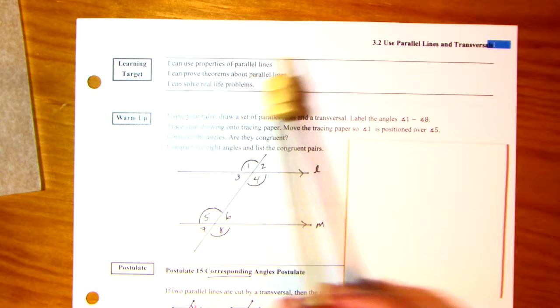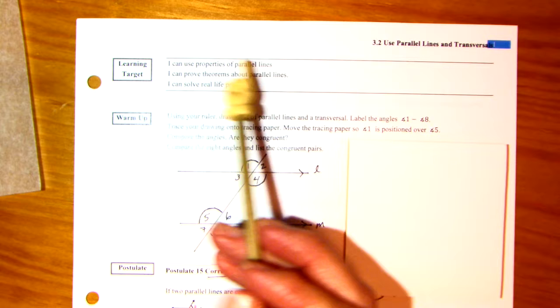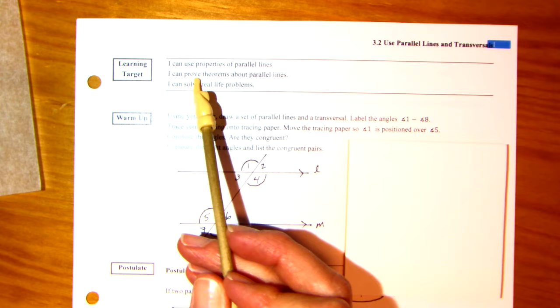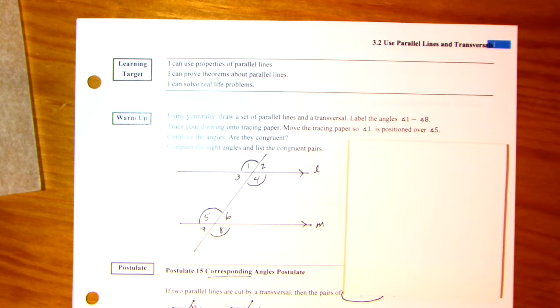Okay, geometry 3.2, parallel lines and transversal. Notice the word use instead of identify. I can use the properties of parallel lines. I can prove, our proof is coming, be patient with this. I will practice so much with you, and you'll see patterns after a while. And I can solve real life problems.